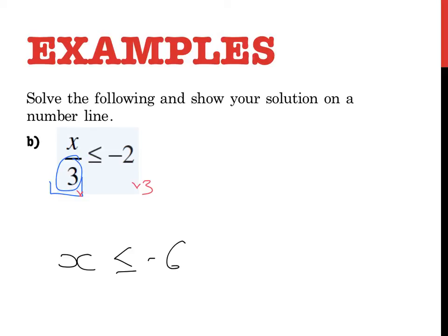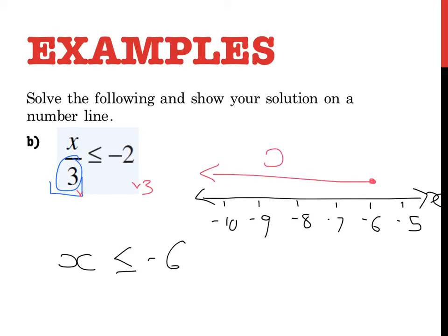And again I'll need to show that on a number line. I'm going to start my number line at an interesting spot. I don't have to start it right at the start. I can go negative 5, negative 6, negative 7, negative 8, negative 9, negative 10. It's X. X is less than or equal to negative 6. So I go over negative 6, but I colour it in because that negative 6 is included. It's less than or equal to X is less than or equal to negative 6.